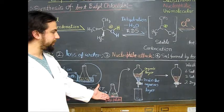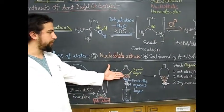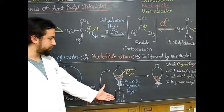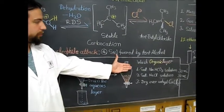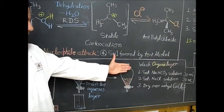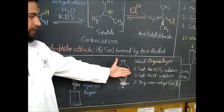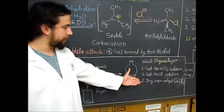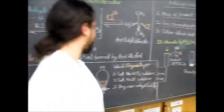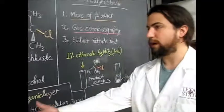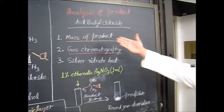Take your product and pour it into the separatory funnel. Perform a wash by first draining the aqueous layer, then wash with 30 milliliters of saturated sodium bicarbonate, followed by 30 milliliters of saturated sodium chloride (brine solution). It can then be dried over anhydrous calcium chloride or sodium sulfate. Once collected from the separatory funnel, we can perform our analysis of the product, which is tert-butyl chloride.